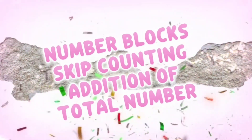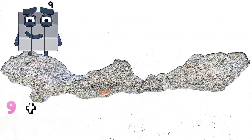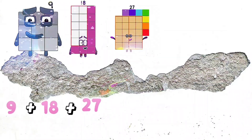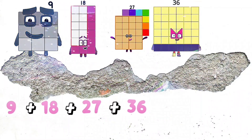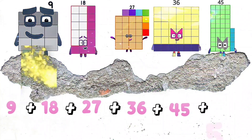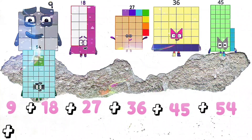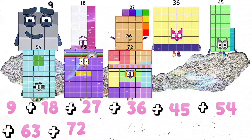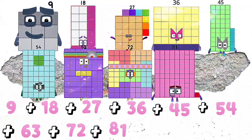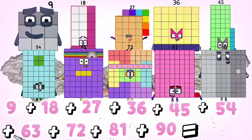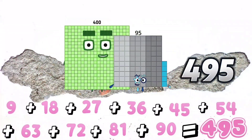Number Blocks Skip Counting and Addition of Total Numbers. 9 plus 18 plus 27 plus 36 plus 45 plus 54 plus 63 plus 72 plus 81 plus 90 is equals to 495.